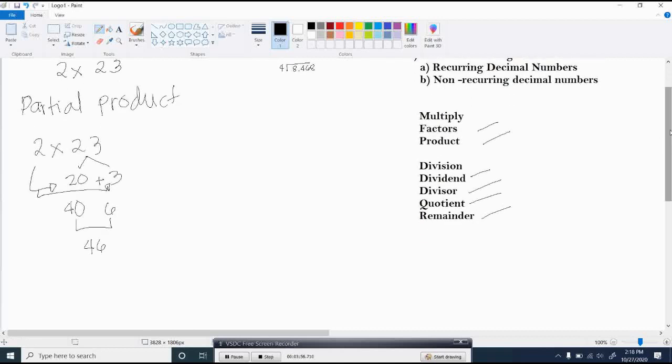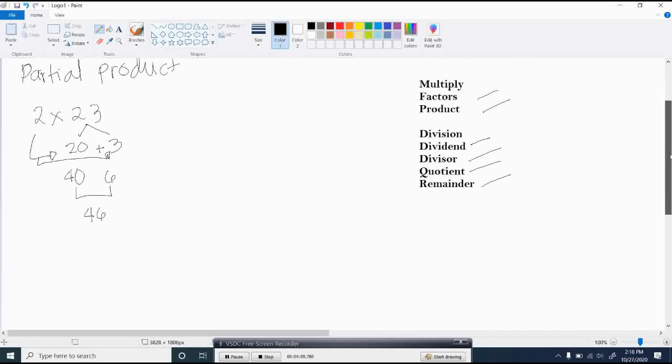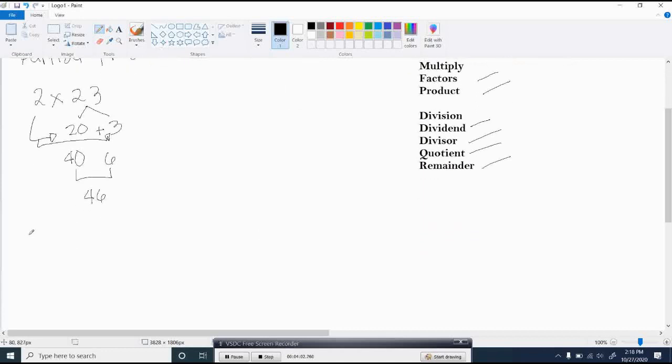Another way on how to multiply these factors is using models. Remember the long, which is equal to 10. And the small cube, which is equal to 1. So let us group 23 into 2 equal groups.